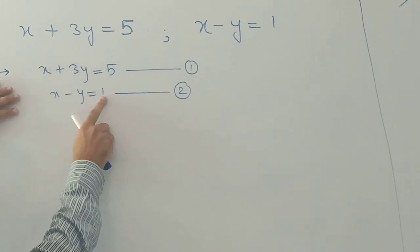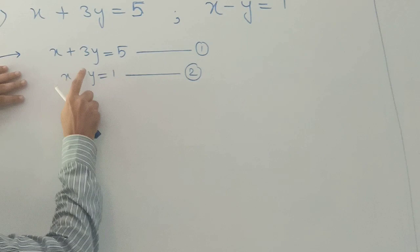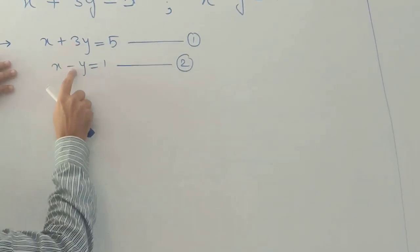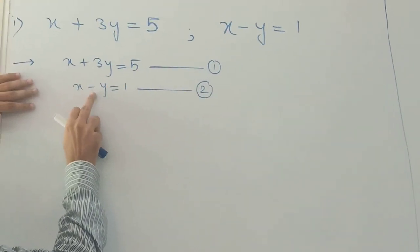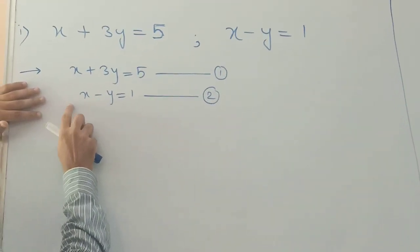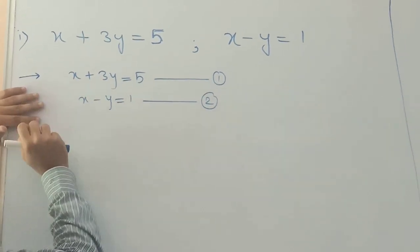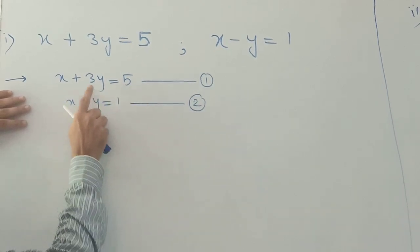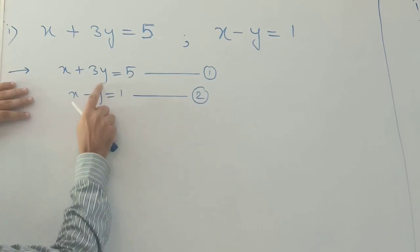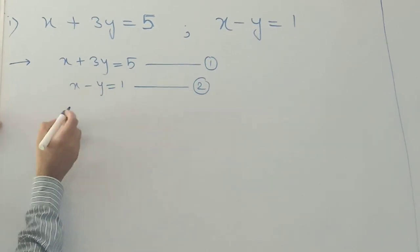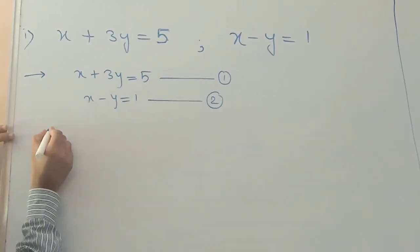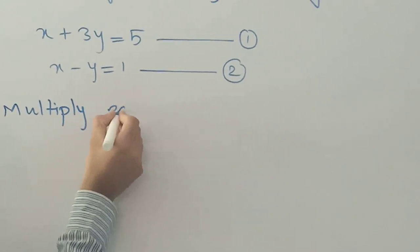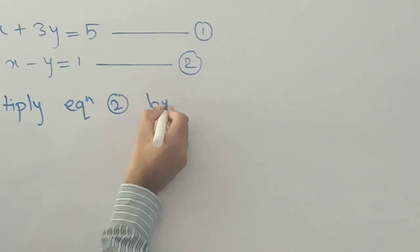We have to make the coefficient of y the same in both equations. Here the coefficient of y is 3 in equation 1, so we need to make it 3 in equation 2 as well. So we will multiply the whole equation number 2 by 3.